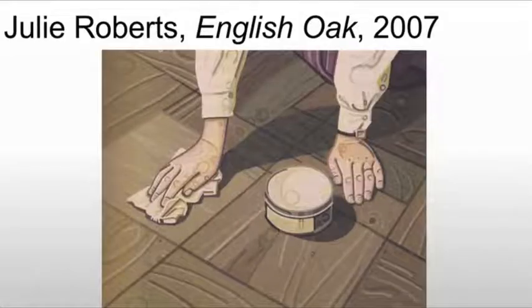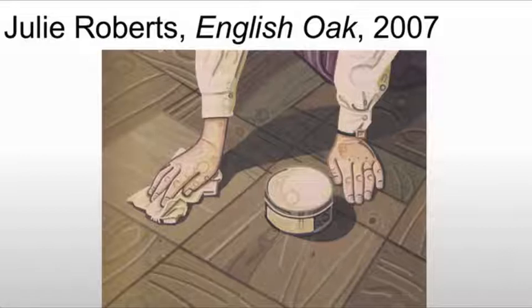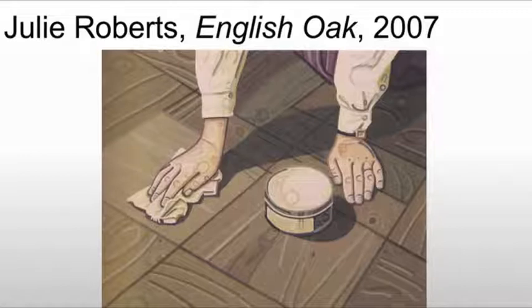The piece we're looking at is by Julie Roberts. This is "English Oak." When we look at it, the first thing you see is that it's not realistic — we have some visual shorthand here, it seems almost cartoonish. But it's showing the realism and drama of human life and death. We see a powerful tension between the technique and the suggestion of the image.